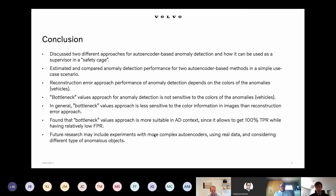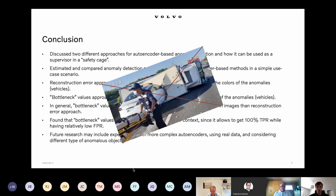Of course, we want to move to using real data. We also want to consider different objects as anomalies, because it was a simple case when we had cars versus empty roads as normal images. It's more difficult when we want to detect pedestrians, animals, or objects not seen during training — like mooses versus kangaroos — while the model was trained on cars and cyclists. This research will hopefully allow us to prevent such incidents from happening in the future.